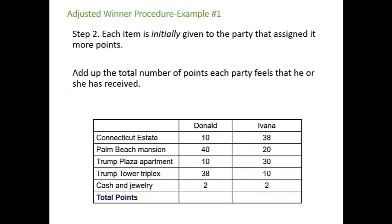In step two, each item is initially given to the party that assigned it more points. For example, the Connecticut estate goes to Ivana because she assigned it more points — 38 versus 10. The Palm Beach mansion initially goes to Donald because he assigned it more points — 40 versus 20. The Trump Plaza apartment will go to Ivana and the Trump Tower triplex will go to Donald. Because the cash and jewelry was awarded the same number of points by both parties, we'll hold off on that item for just a moment.